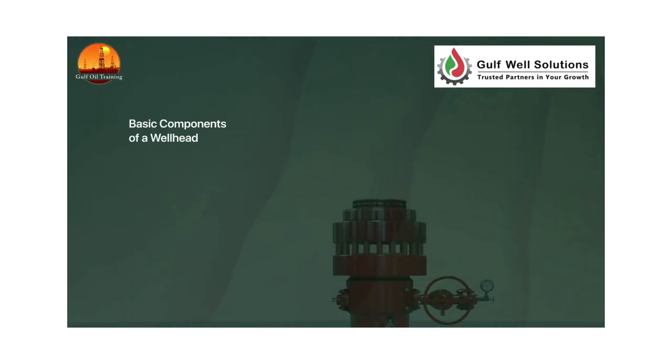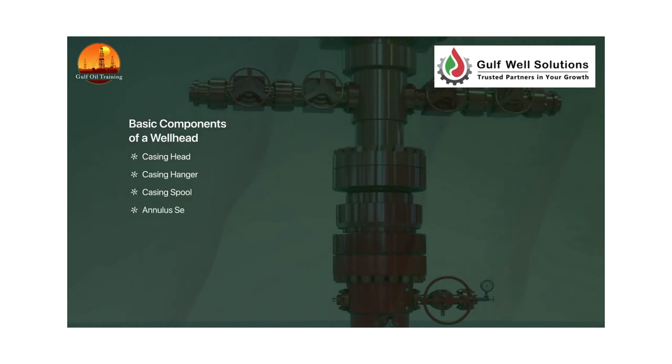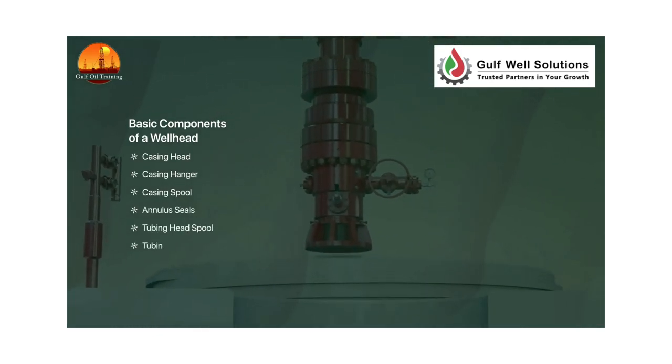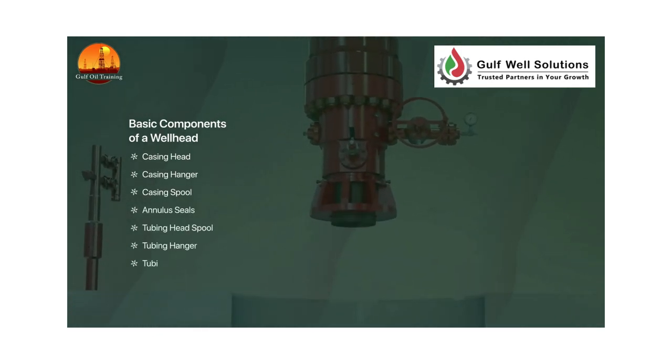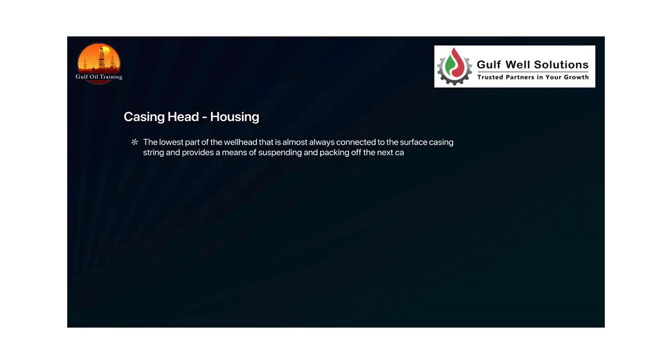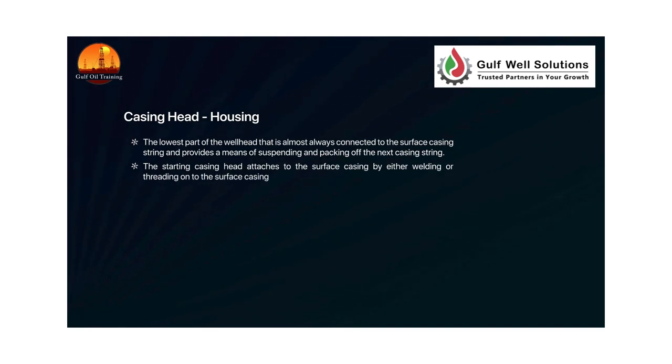The basic components of the wellhead are: casing head, casing hanger, casing spool, annulus seals, tubing head spool, tubing hanger, and tubing adapter. The casing head housing is the lowest part of the wellhead, almost always connected to the surface casing string, and provides a means of suspending and packing off the next casing string. The starting casing head attaches to the surface casing by either welding or threading onto the surface casing.